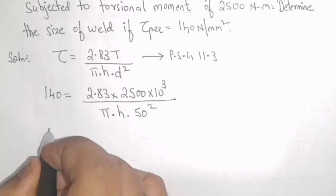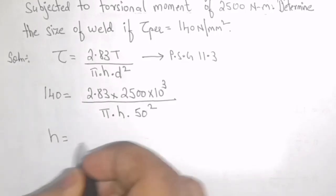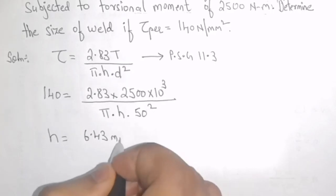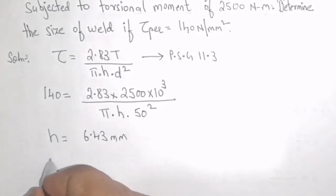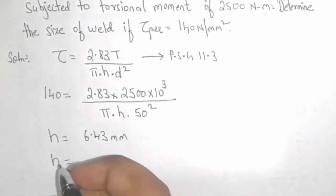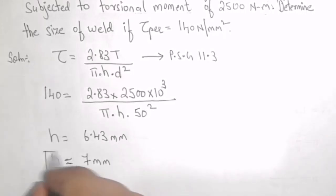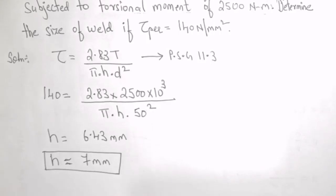On solving this expression, I will get H is equal to 6.43 mm. Or I can write H that is size of the weld is approximately equal to 7 mm. This completes the solution.